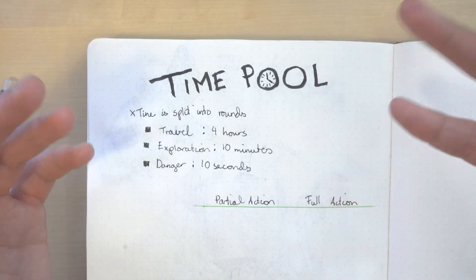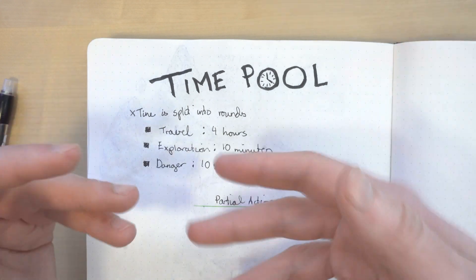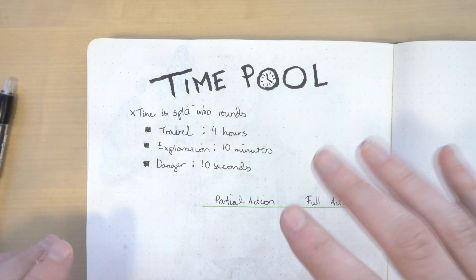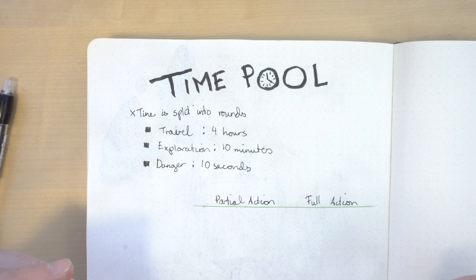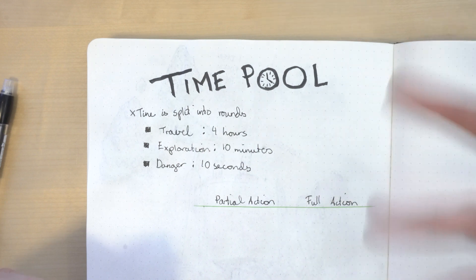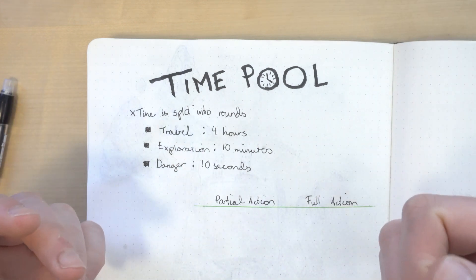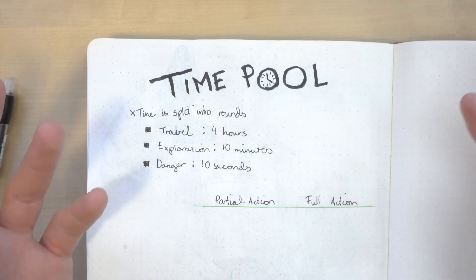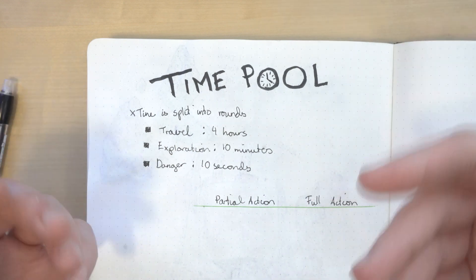If you know any mechanic like this, please let me know down in the comments. I won't be surprised if it's rooted in some OSR mechanic. So what is this time pool mechanic? In situations where time is of essence, you as the GM start a time pool.